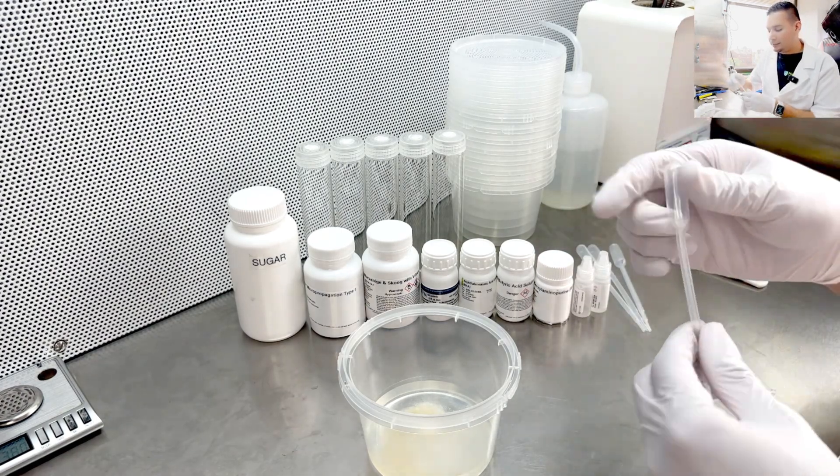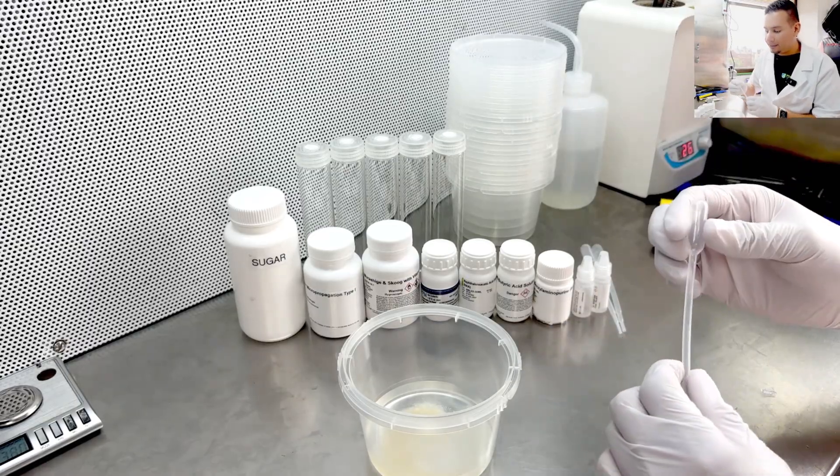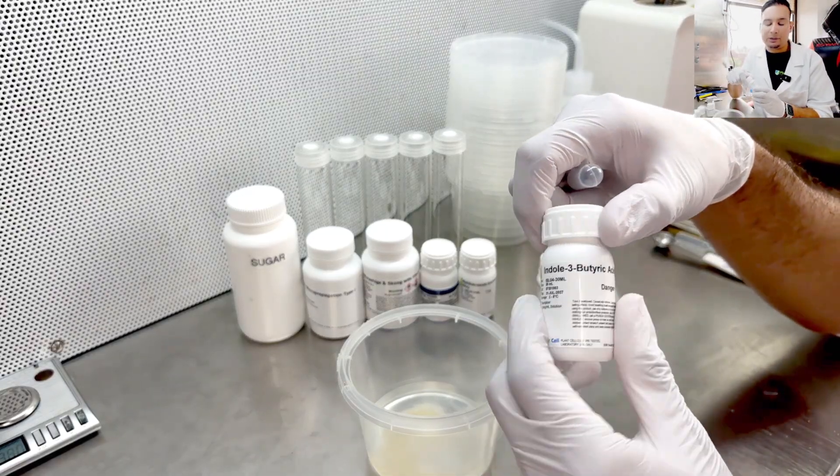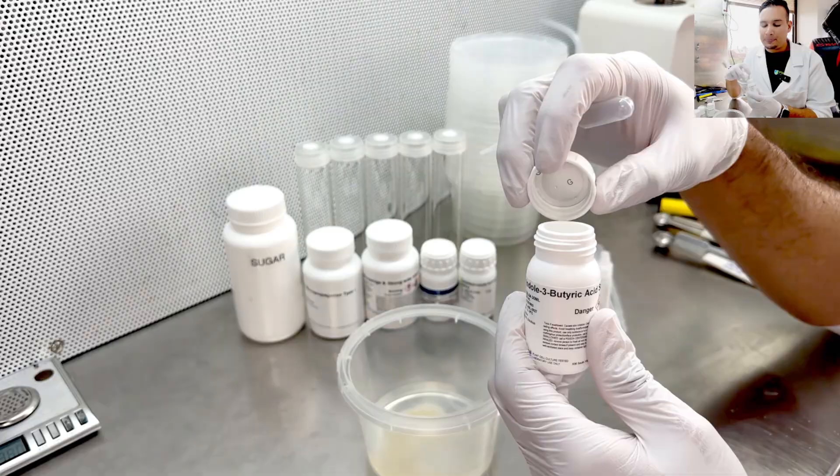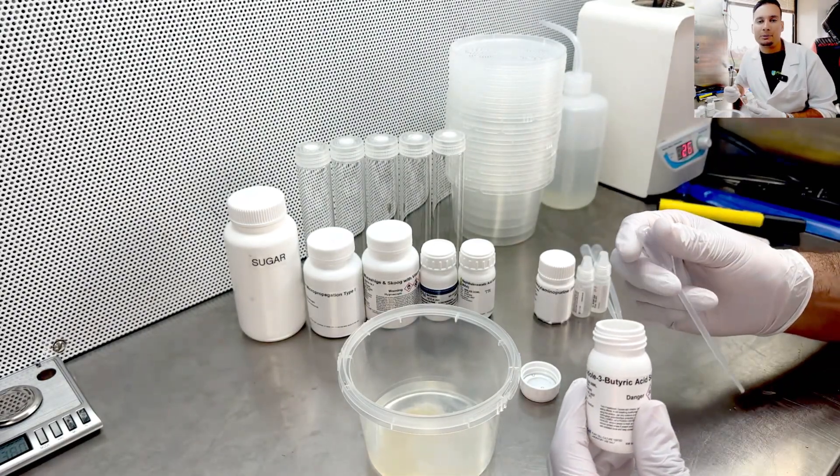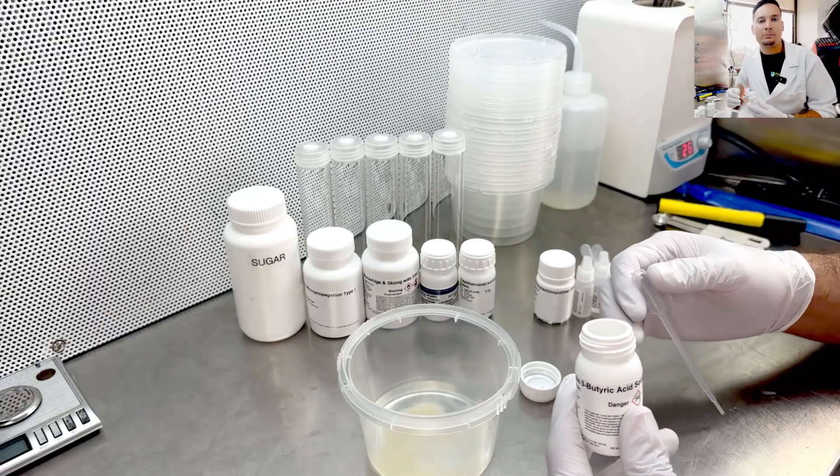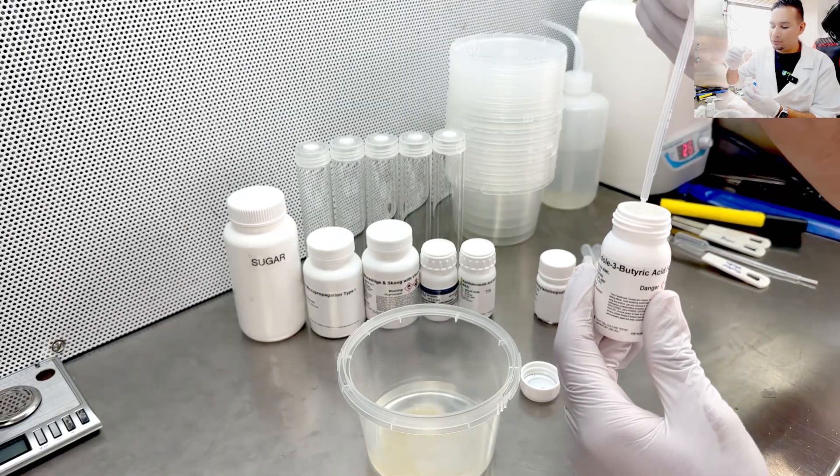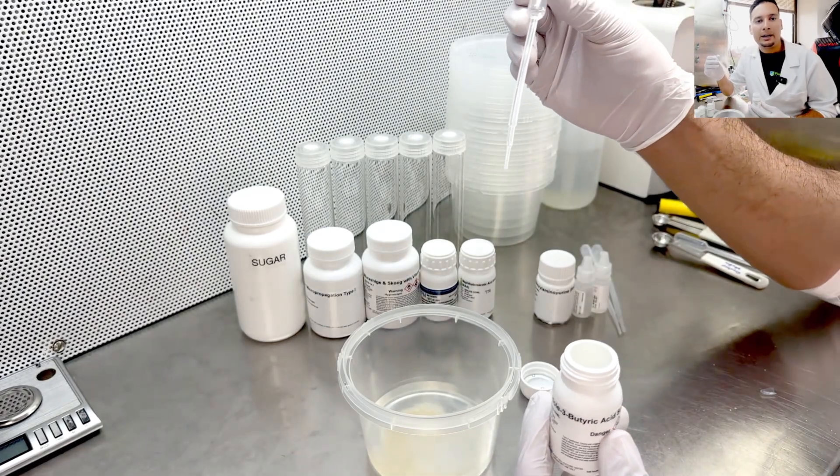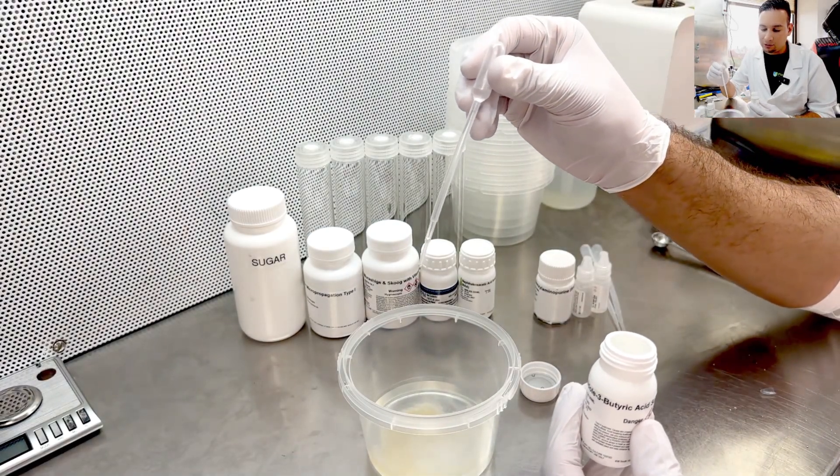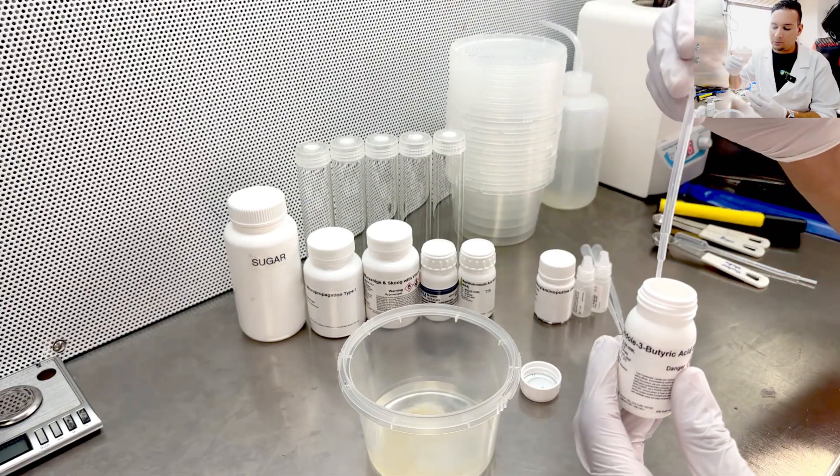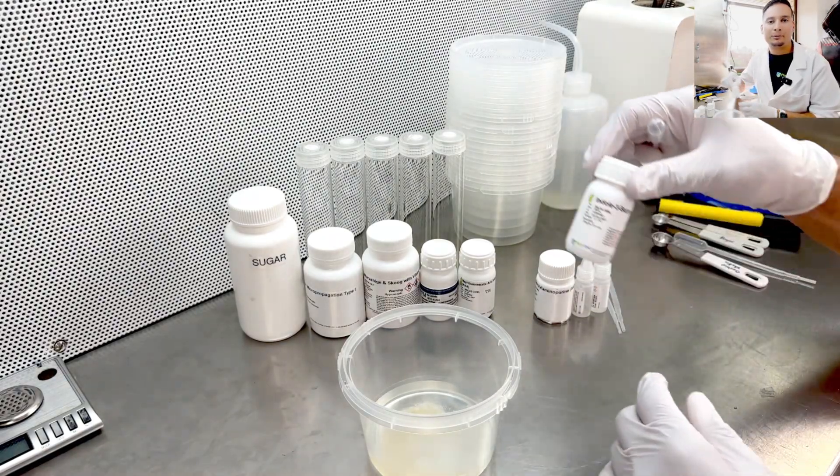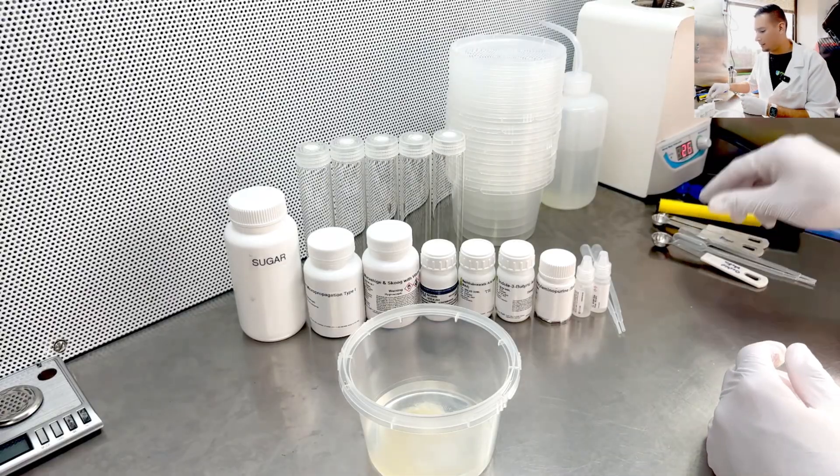Next up, I want to grab another clean pipette and add IBA. IBA is going to be my rooting agent or rooting hormone. In this case, this is multiplication media, but I still want to add a little bit of IBA just to balance the media so my plants still grow and have a good size. I need the equivalent to roughly 0.1 milliliters. So for that, I only want to add one drop. One drop of IBA.